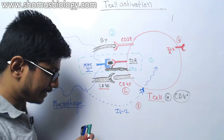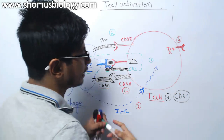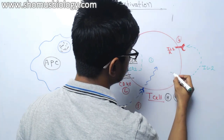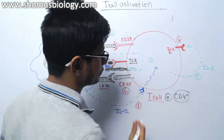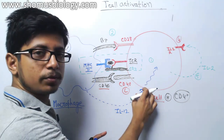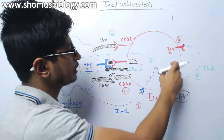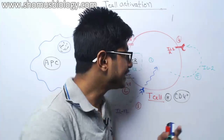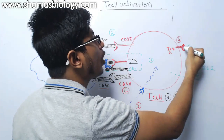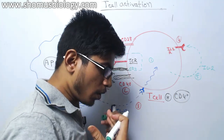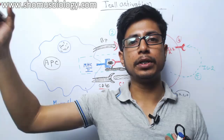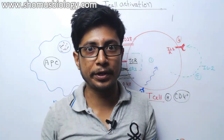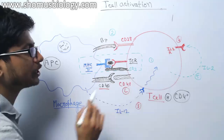After the interleukin-12 signaling, the T cell starts releasing interleukin-2. That interleukin-2 secreted by the T cell acts on itself — the cell is producing interleukin-2 and also producing the interleukin-2 receptor, and that interleukin-2 interacts with its own receptor, causing self-activation. This is called autocrine signaling, mediated by T cells during the self-activation process.